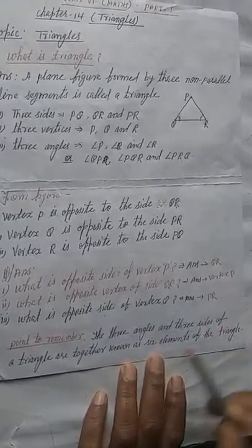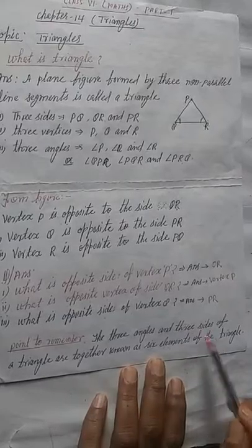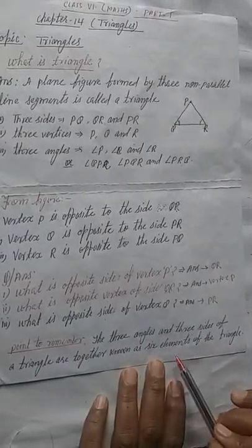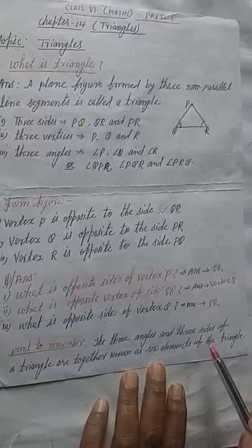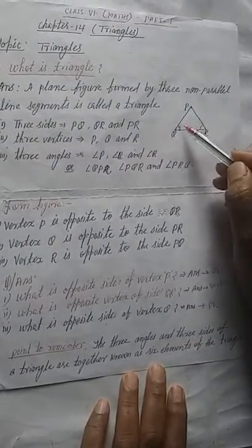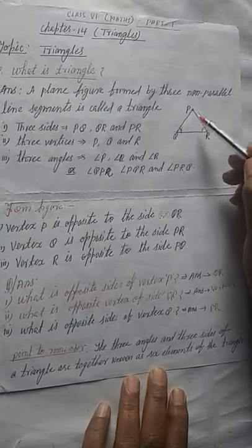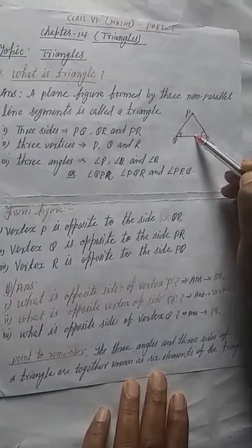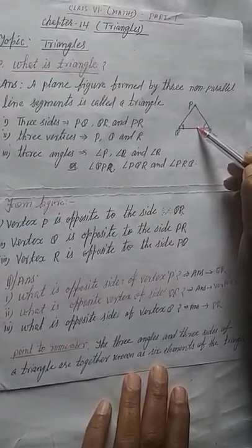So three sides and three angles together are known as six elements of the triangle. Because three sides and three angles, we can say six elements of the triangle. I hope you have understood my lecture. Thanks.